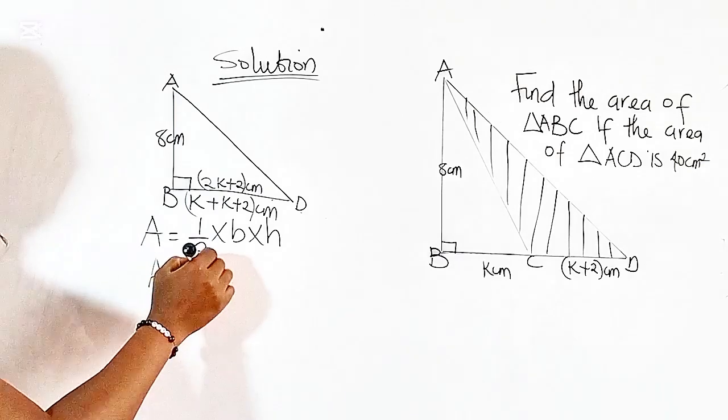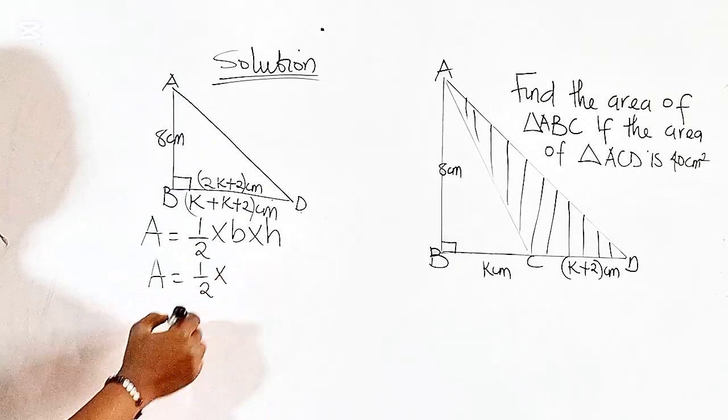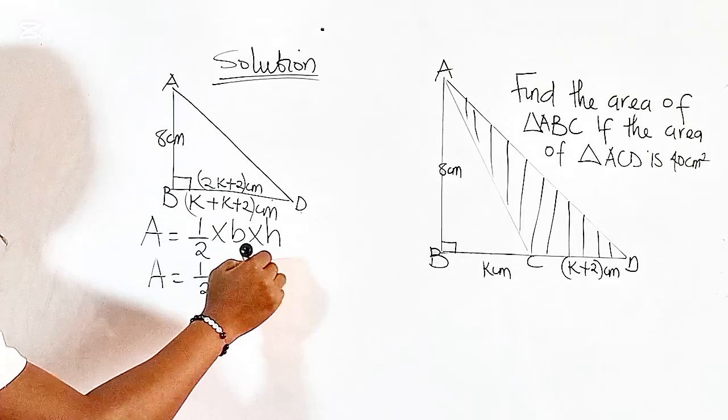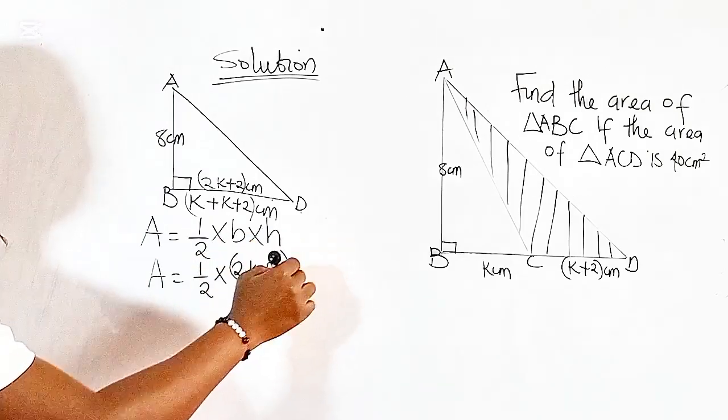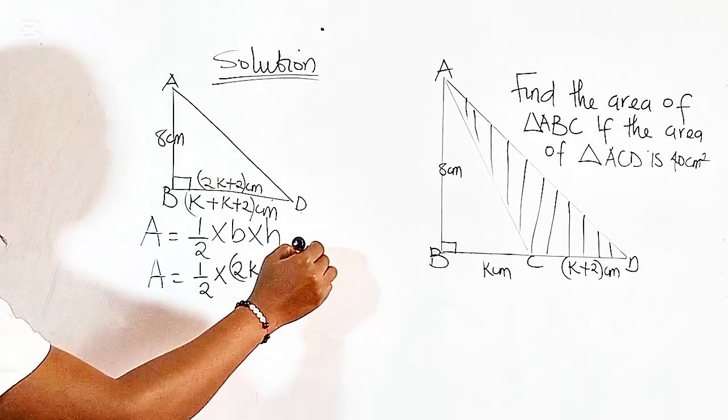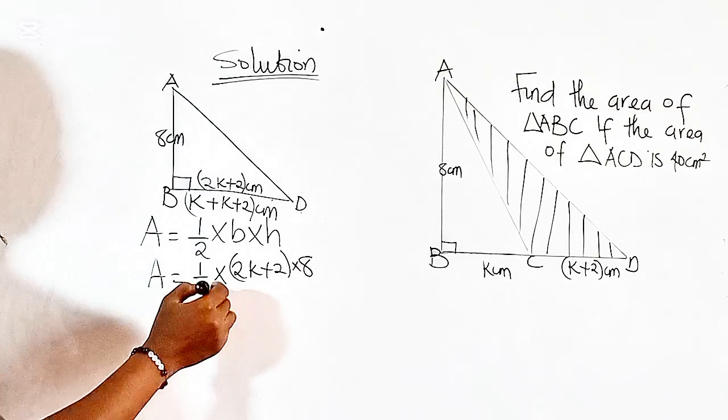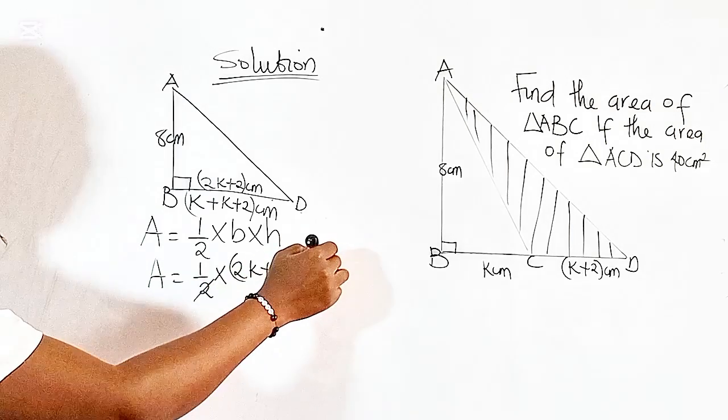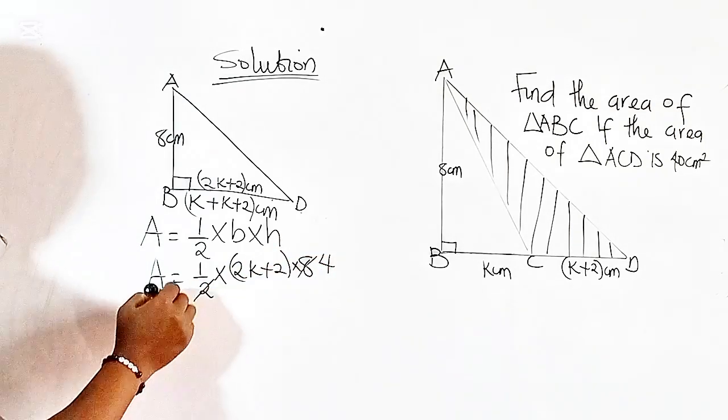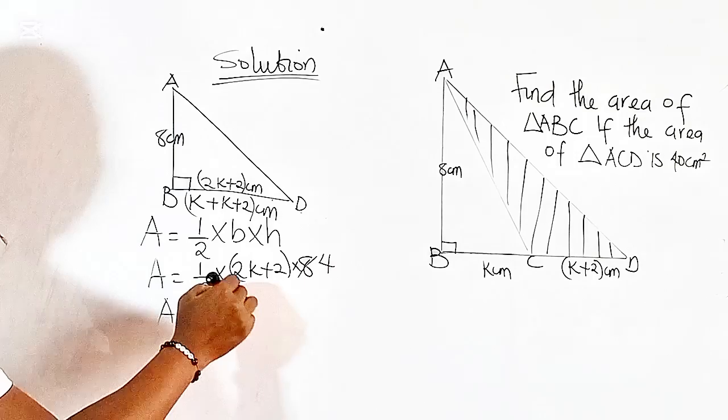So we have the area of the triangle equal to 1 over 2 times the base, which is 2K plus 2, times the height, which is 8 cm.